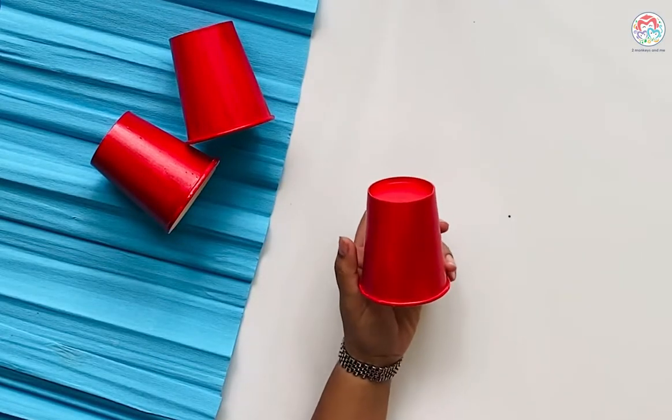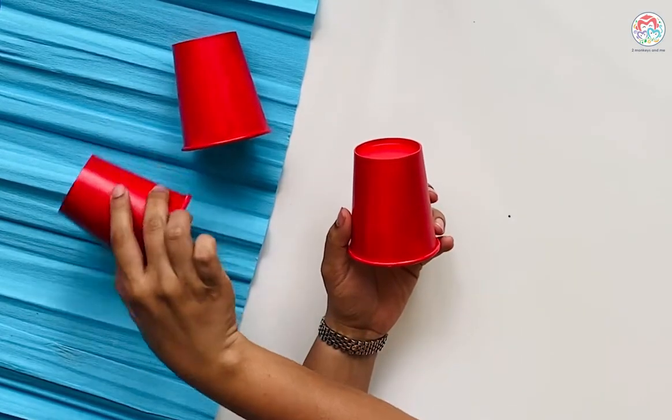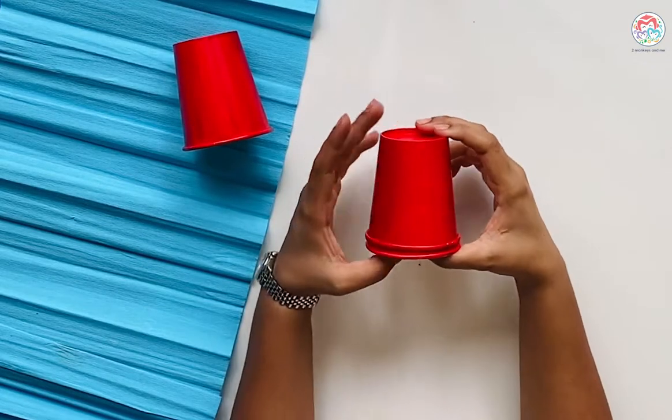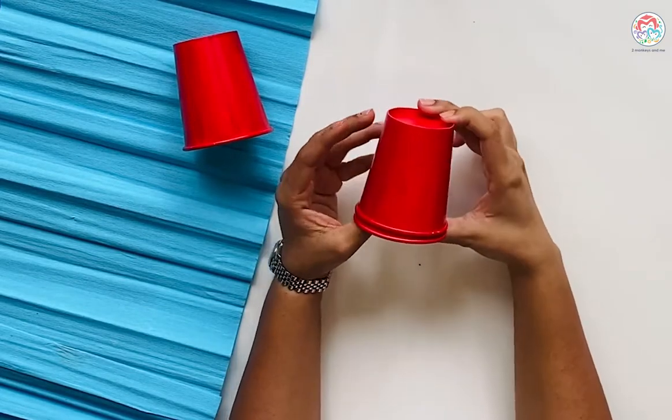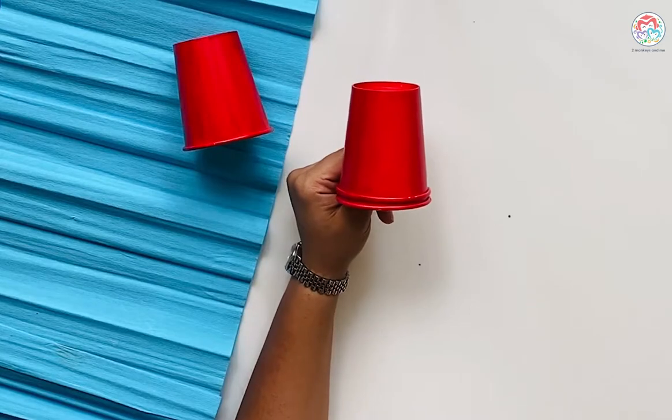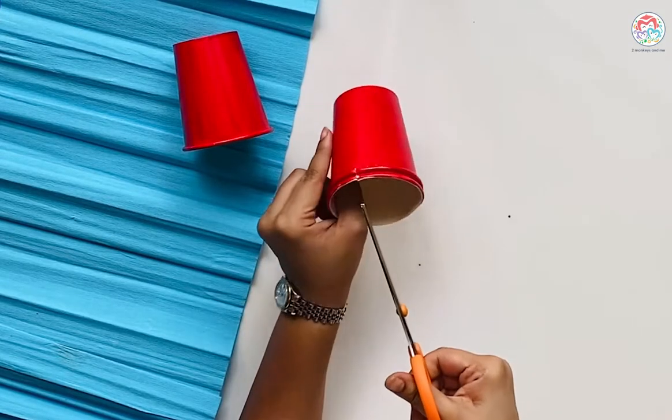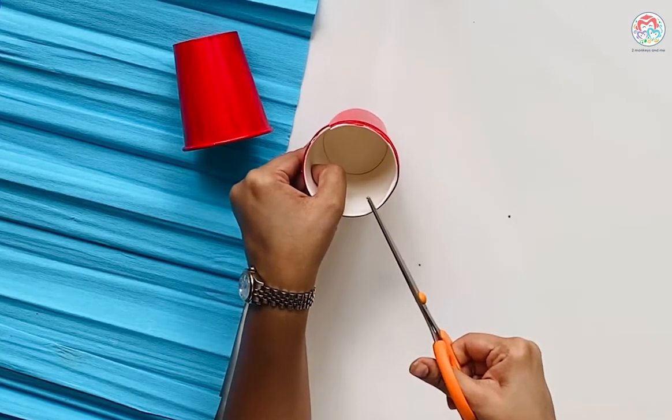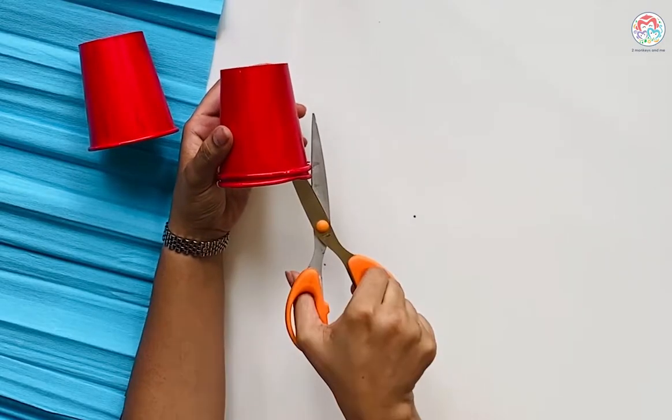To make the base of the crab, you need two cups to make it stronger. Put the two cups together and make a slit in each one. The second slit has to be exactly on the opposite side.